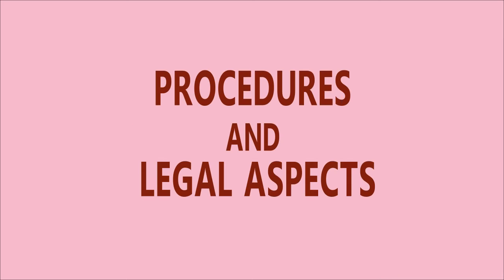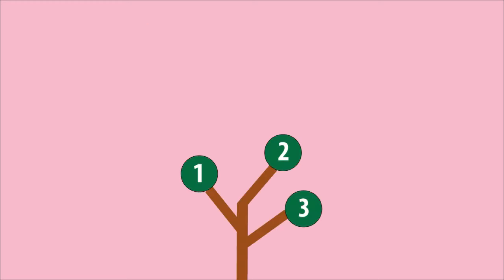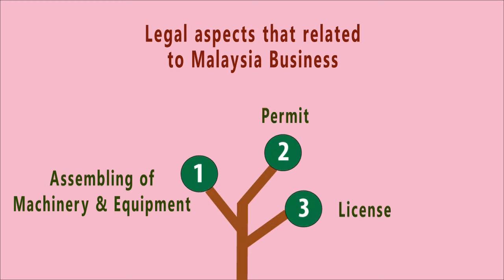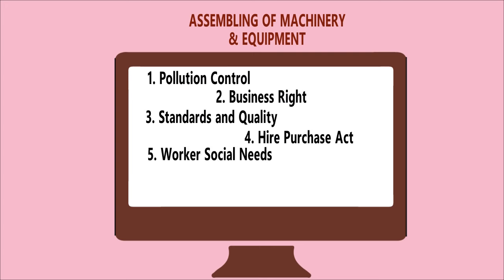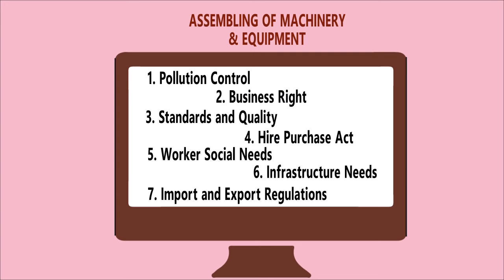Next, we look at procedures and legal aspects. There are three legal aspects related to Malaysia business: assembling of machinery and equipment, permit, and license. We will examine the elements in assembling of machinery and equipment.